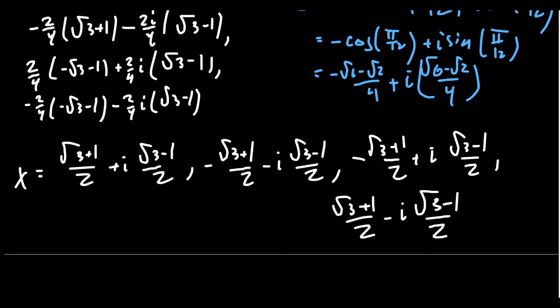We've now found all four complex roots of this polynomial. At first it started out pretty manageable — just the quadratic formula — then we had to take complex square roots, which got a little messy, but we worked through it using trigonometric forms. This brings us to the end of lecture 34 and the end of our chapter on complex numbers and how trigonometry can help with complex algebraic problems — a technique beyond even a college algebra class. If you found it interesting, please like, subscribe, and post any questions in the comments.